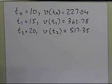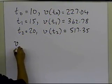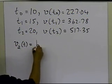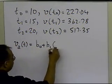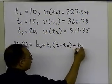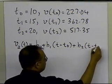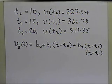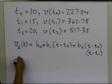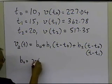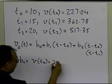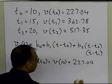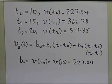Now let's find b0, b1, and b2 in the expression for the second-order polynomial for velocity: b0 + b1(t − t0) + b2(t − t0)(t − t1). b0 is simply the value of the function at t0, which is the velocity at 10, giving us 227.04. So we've found the first constant, b0.